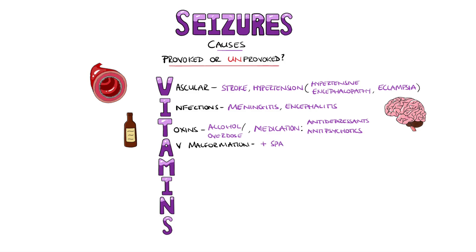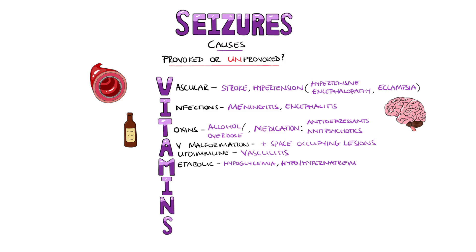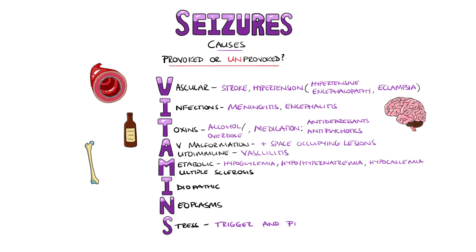A stands for arteriovenous malformations and other structural abnormalities like space-occupying lesions, and also helps remember autoimmune conditions like vasculitis. M is for metabolic causes such as hypoglycemia, hypo and hypernatremia, and hypocalcemia. M will also help you remember multiple sclerosis. The second I is for idiopathic seizures, N is for neoplasms as tumours can also cause seizures, and S is for stress, which can not only be a trigger in epileptic patients but can also predispose to developing epilepsy in the first place.